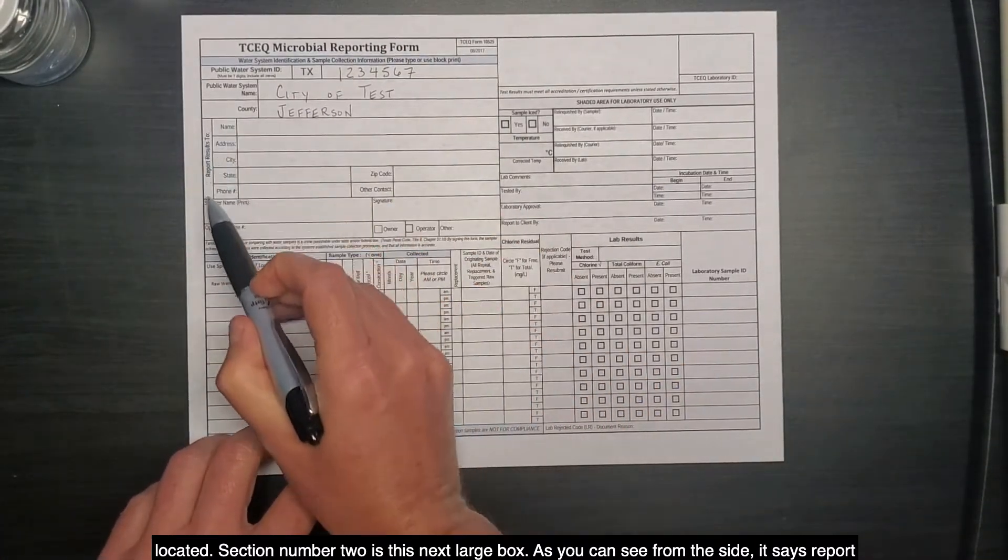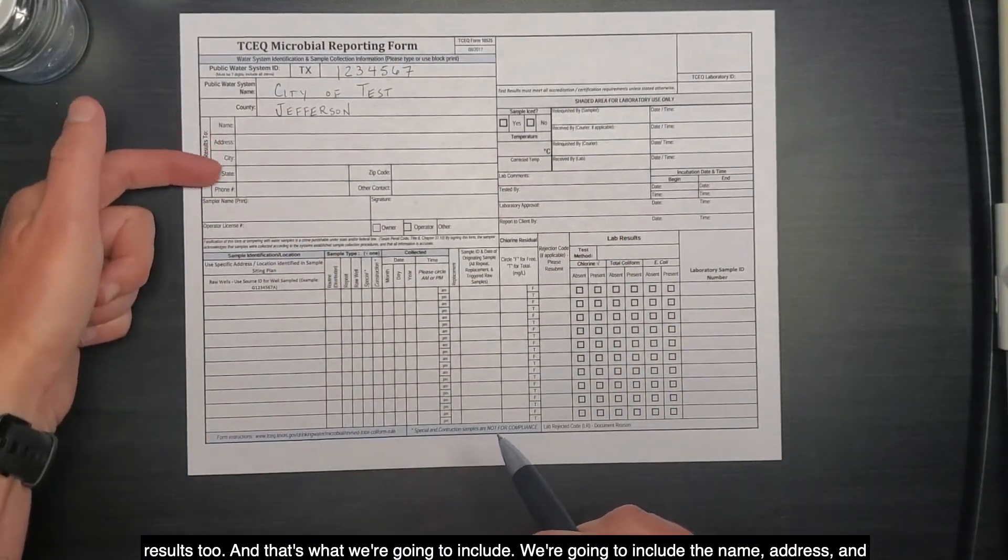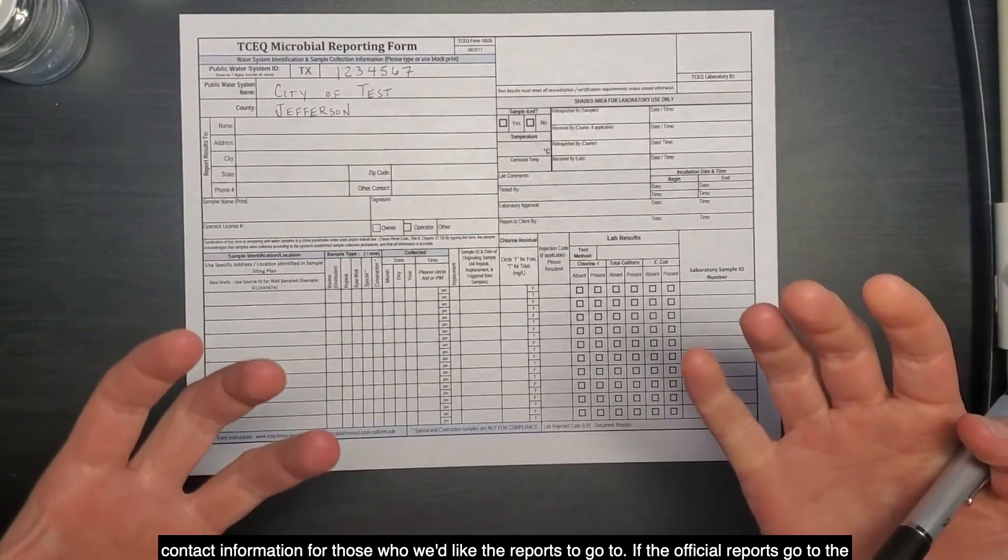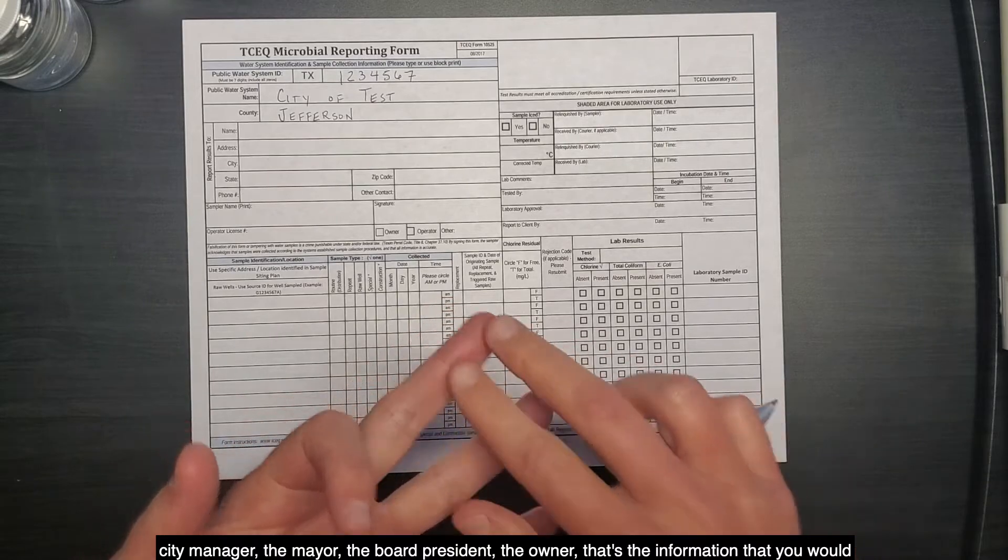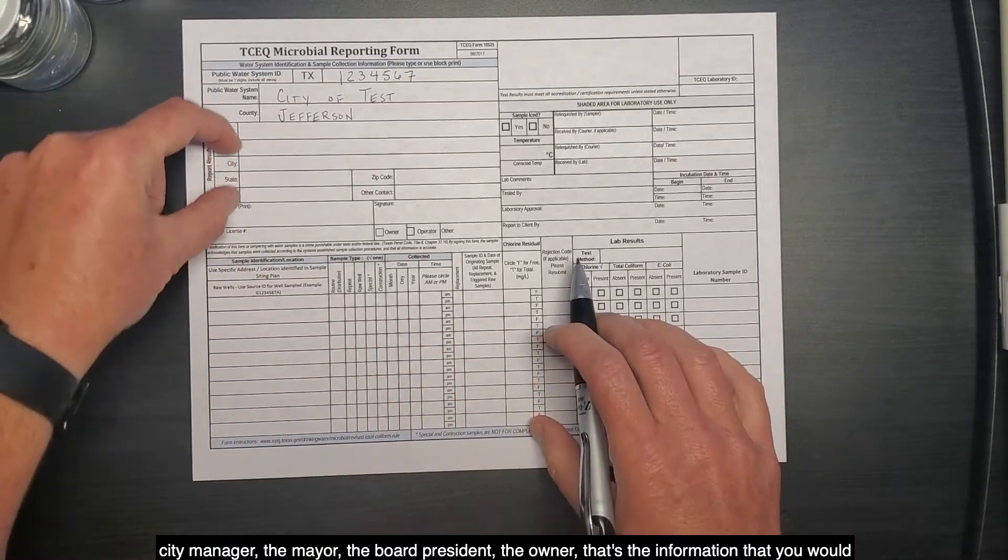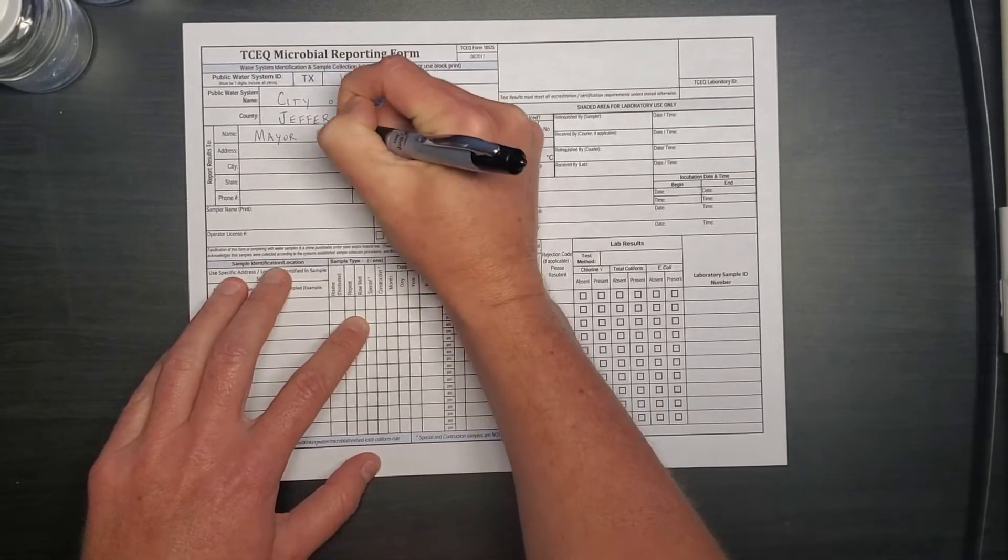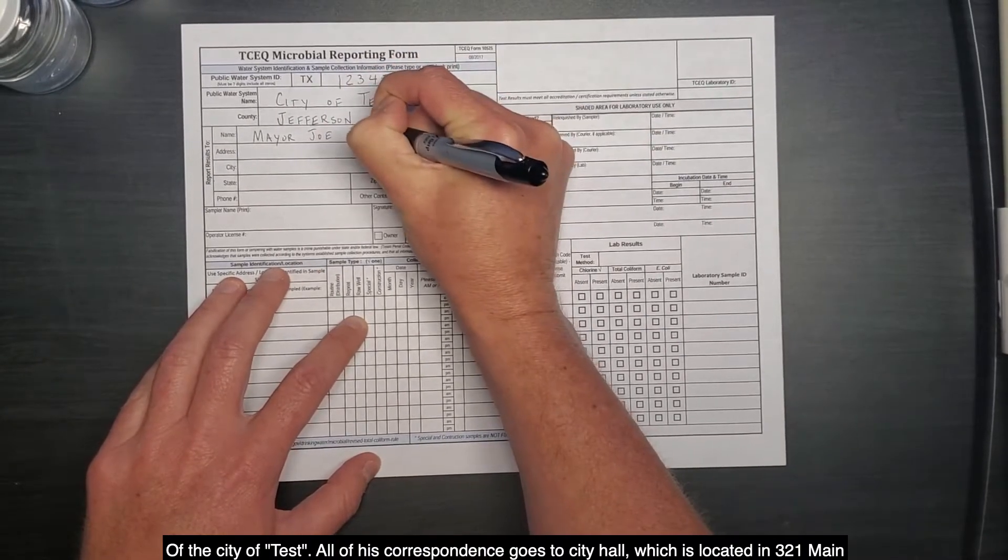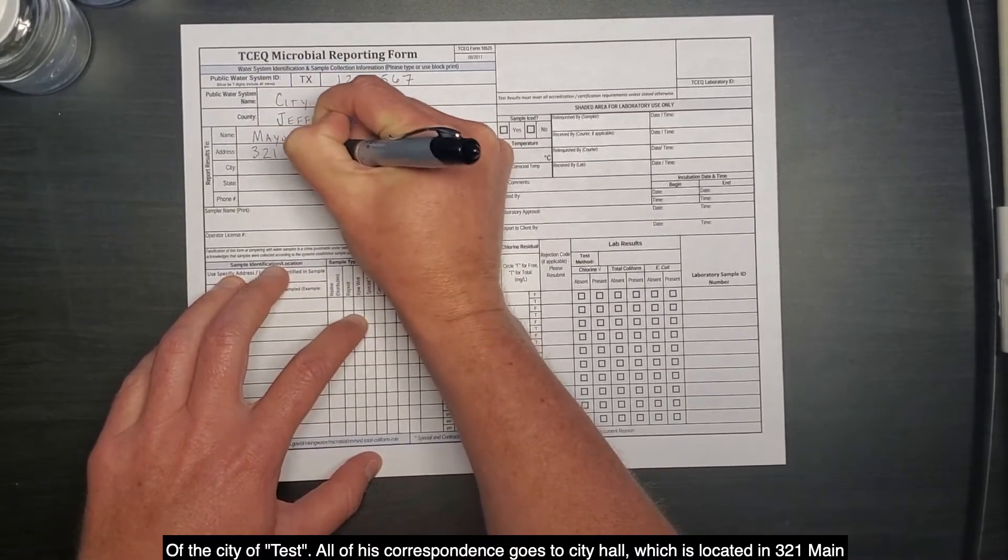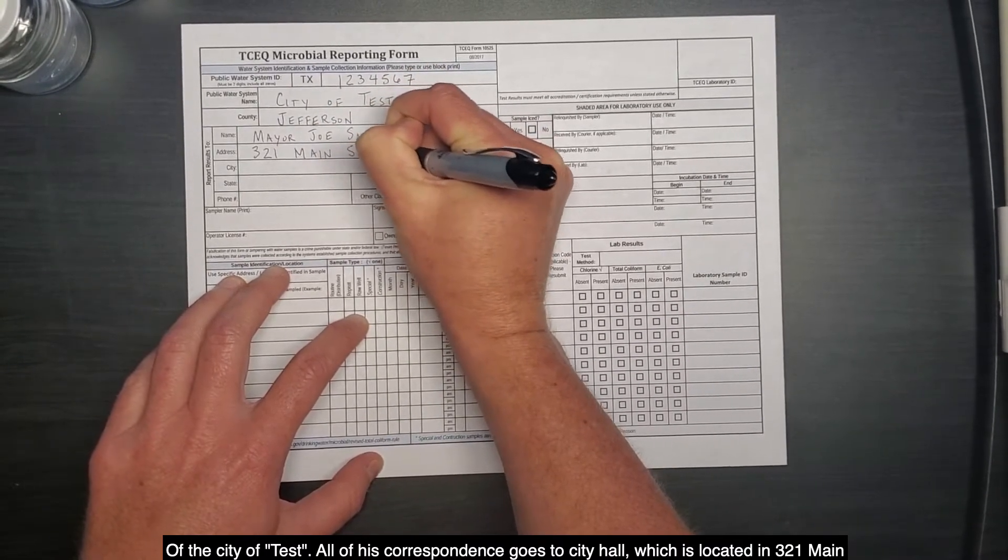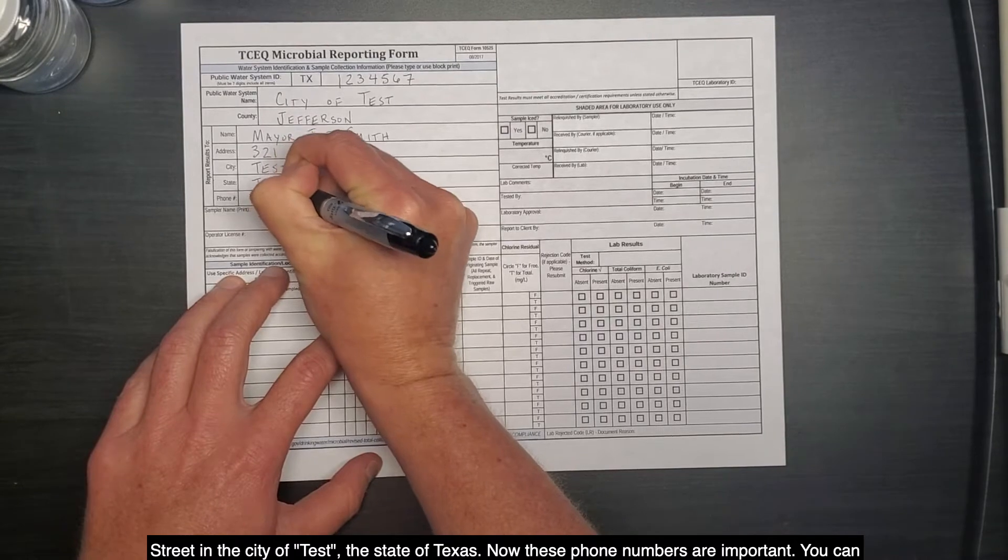Section number two is this next large box. As you can see from the side, it says Report Results 2, and that's what we're going to include. We're going to include the name, address, and contact information for those who we'd like the reports to go to. If the official reports go to the City Manager, the Mayor, the Board President, the Owner, that's the information that you would include in this top section. In this case, we're going to put in the Mayor of the City of Test. All of his correspondence goes to City Hall, which is located at 321 Main Street in the City of Test, the State of Texas.